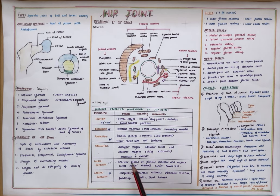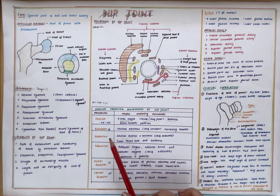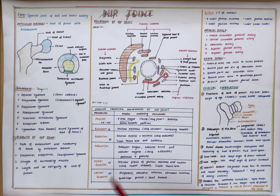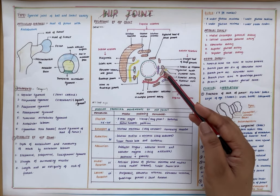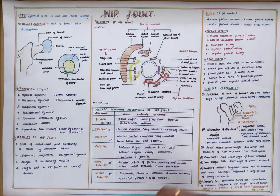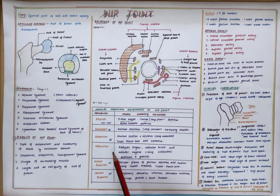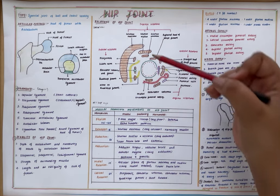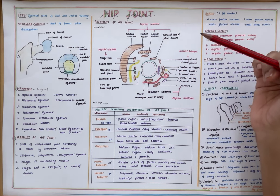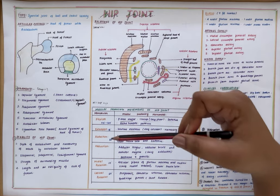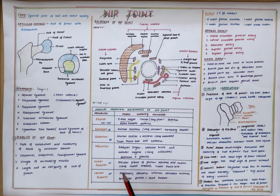Coming to the muscles producing movements in the hip joint, the movements are flexion, extension, abduction, adduction, medial rotation, and lateral rotation. Flexion is by the iliopsoas muscle, and also sartorius and rectus femoris. Extension is by the gluteus maximus and the hamstring muscles. Abduction is by the gluteus medius, gluteus minimus, tensor fascia latae, and sartorius.